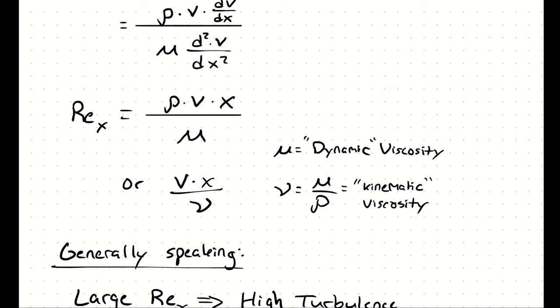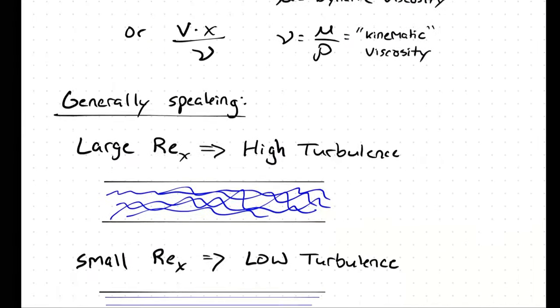For internal flow, it's usually a diameter. For flow across an airfoil, it might be the cord length of the airfoil. The thing that matters is that the length parameter is used the same way when we're generalizing, and when we're trying to apply those generalizations.